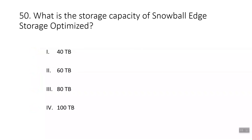Question fifty: what is the storage capacity of Snowball Edge Storage Optimized? The answer is 80 TB. Snowball Edge Storage Optimized provides 80 TB of HDD capacity for block volumes and Amazon S3-compatible object storage, and 1 TB of SATA SSD for block storage.